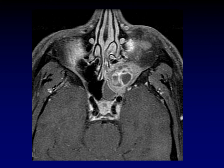Fibrous dysplasia and ossifying fibromas can be very confusing on MRI. They can look very aggressive, with cystic areas and weird enhancement patterns. Often it's not until you see the CT that you can make the diagnosis of fibrous dysplasia. This is a favorite boards question because it can look very aggressive and everyone thinks about an aggressive tumor, but it's a benign entity and the CT is an easy slam dunk.